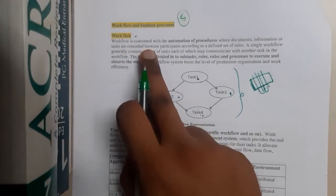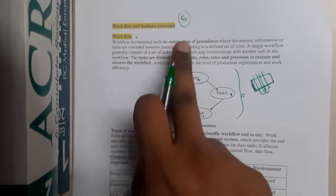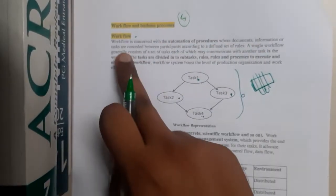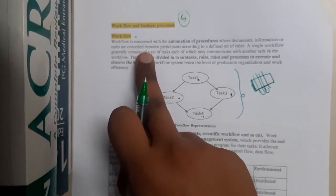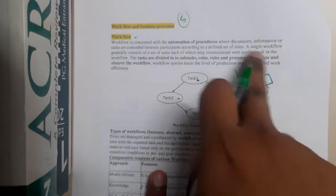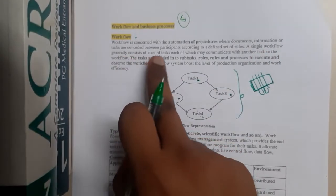So workflow is concerned with the automation of procedures where documentation, information, or tasks are consented between participants according to their defined rules. A single workflow generally consists of a set of tasks.